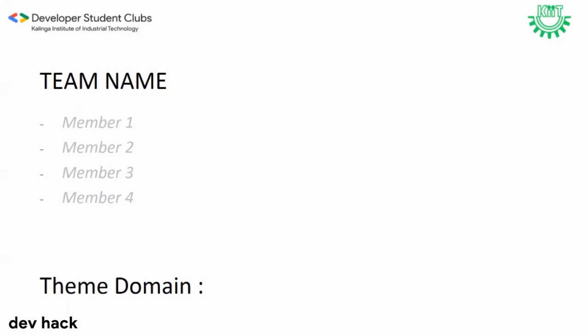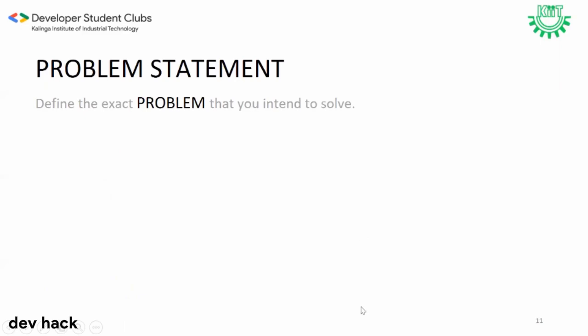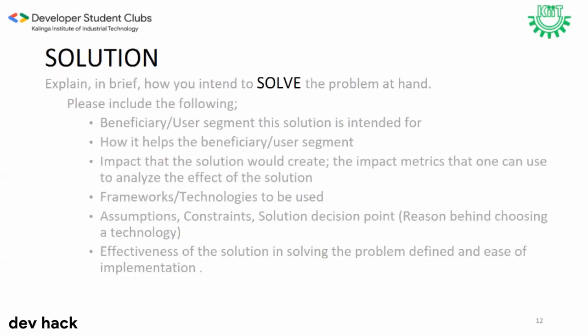Hi guys, welcome to Dev Hack by Developer Student Club KIT. The team is the most important part of any hackathon — people are going to look at your team and judge it. After selecting your team members, select your theme domain, then your main problem statement. Break down your problem statement into solvable chunks and start working on them. Conduct surveys, gather information, and explore the problem statement to map out its gravity. Then get into the solution and mention how you have solved the problems and their uniqueness.